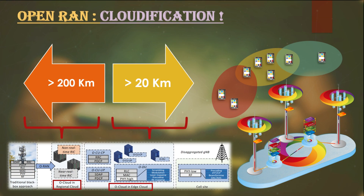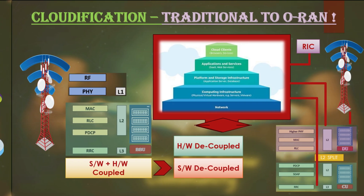These are called O-Cloud platforms, and they can be deployed at different stages of the system. They can be deployed at the edge level, generally within 20 kilometers from the cell, where the Centralized Unit and Distribution Unit can be placed. If deploying within 200 kilometers from the cell or site area, this is generally called regional cloud, where we place Radio Intelligent Controllers.